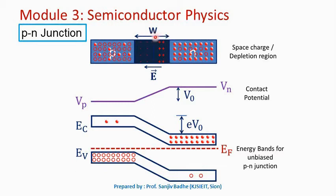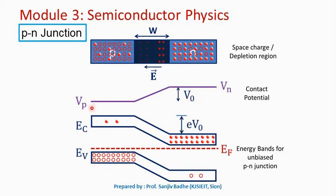The width of the depletion region W depends on the carrier concentration on the N side and the carrier concentration on the P side — that is, electron concentration on the N side and hole concentration on the P side. The positive space charge and negative space charge near the junction give rise to a potential difference called the contact potential or barrier potential. If V_N is the potential on the N side and V_P is the potential on the P side, then V_0 = V_N − V_P is the contact potential.